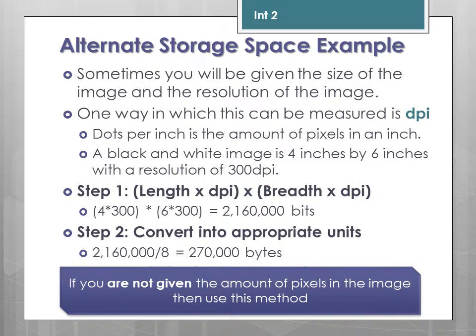Occasionally they will give you the physical size of the image and its resolution. For example, a 4x6 inch image with a resolution of 300 DPI. You still need to work out the amount of pixels long by pixels down. So: 4 × 300 = 1200 pixels of length, and 6 × 300 = 1800 pixels of breadth. That gives 1200 × 1800 = approximately 2,160,000 bits.